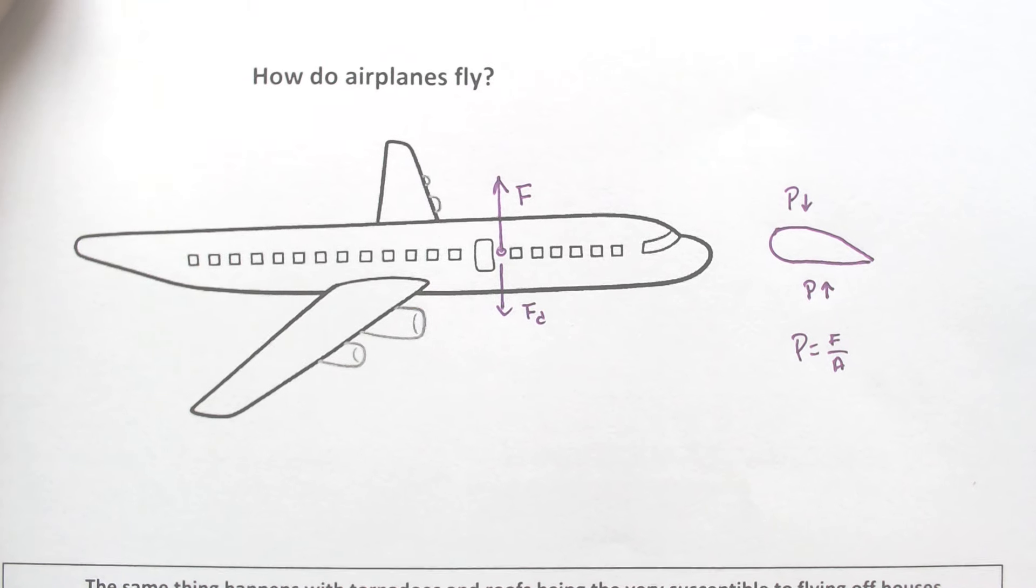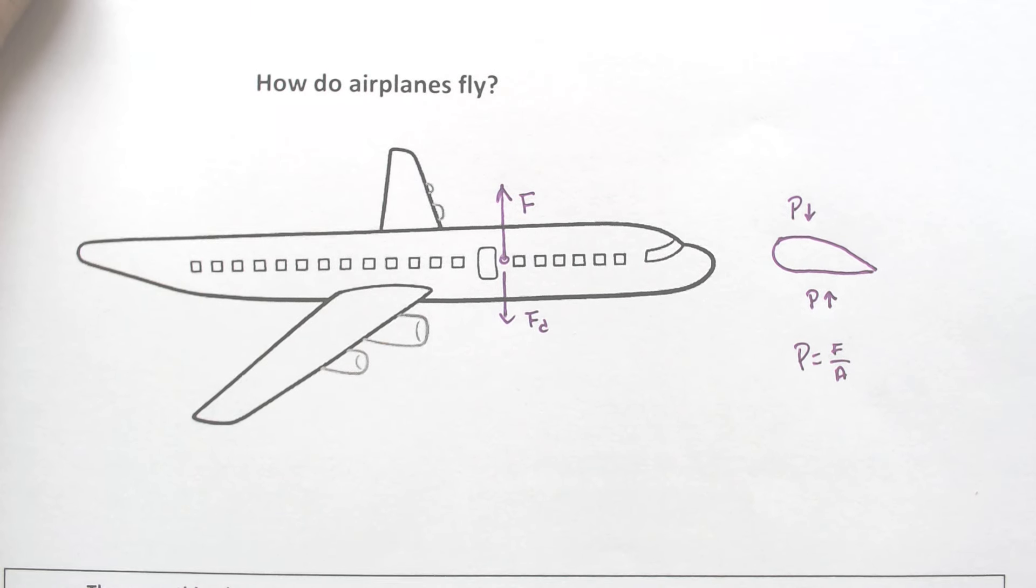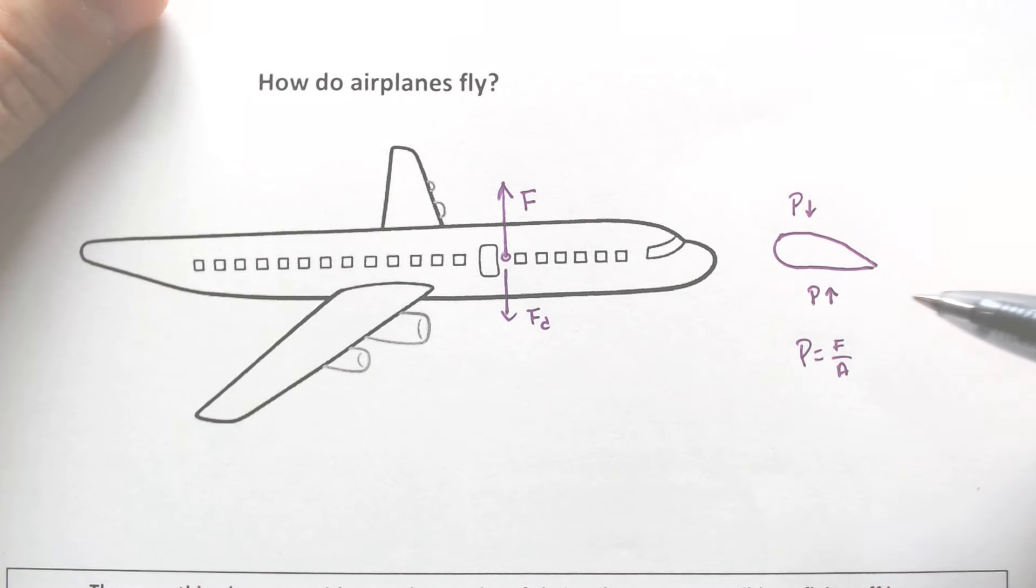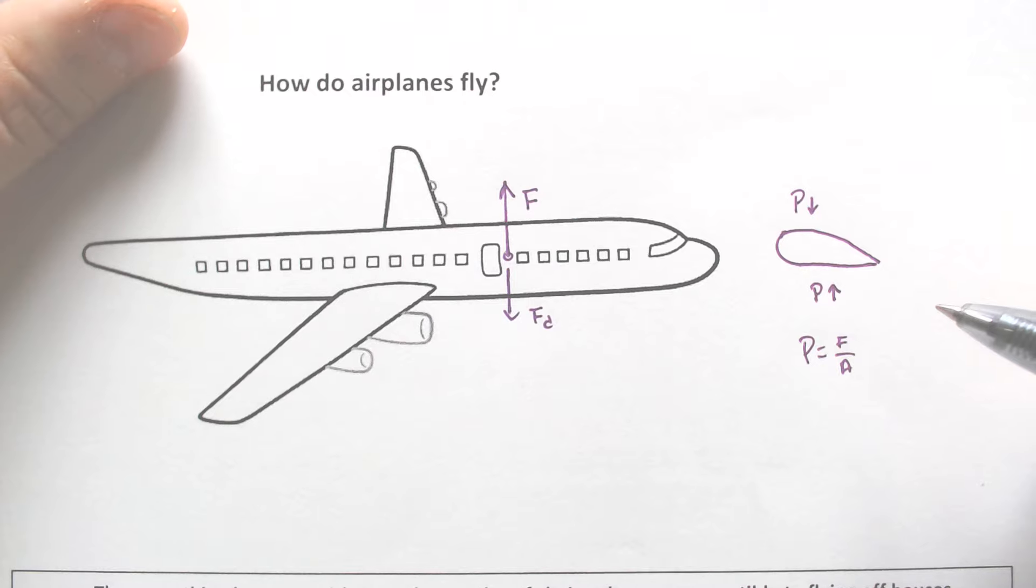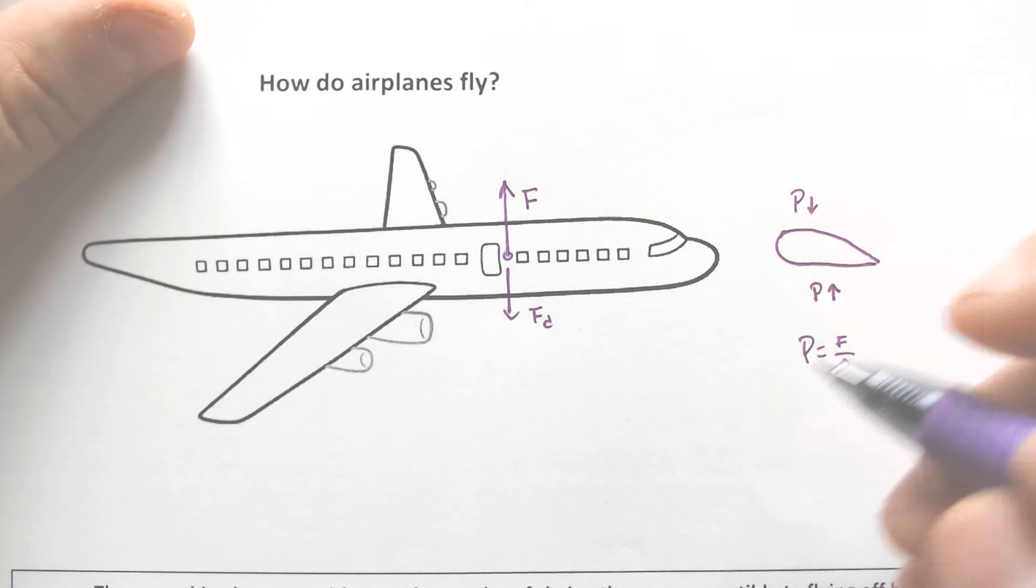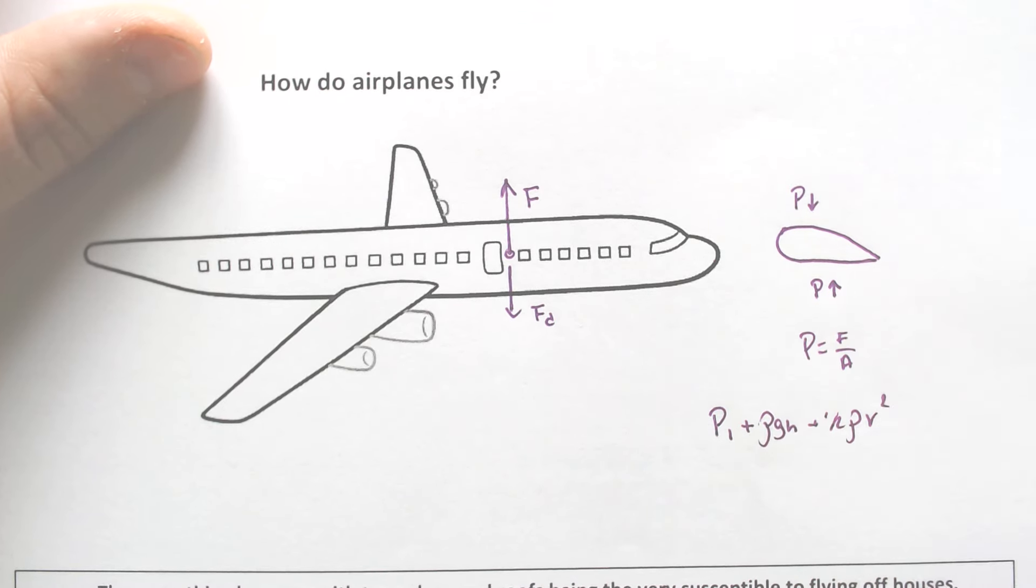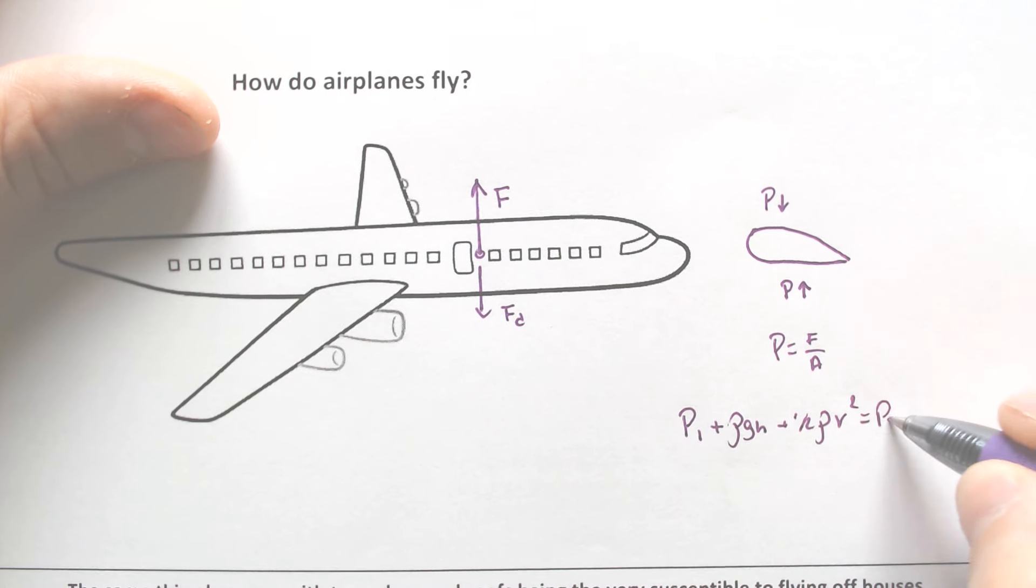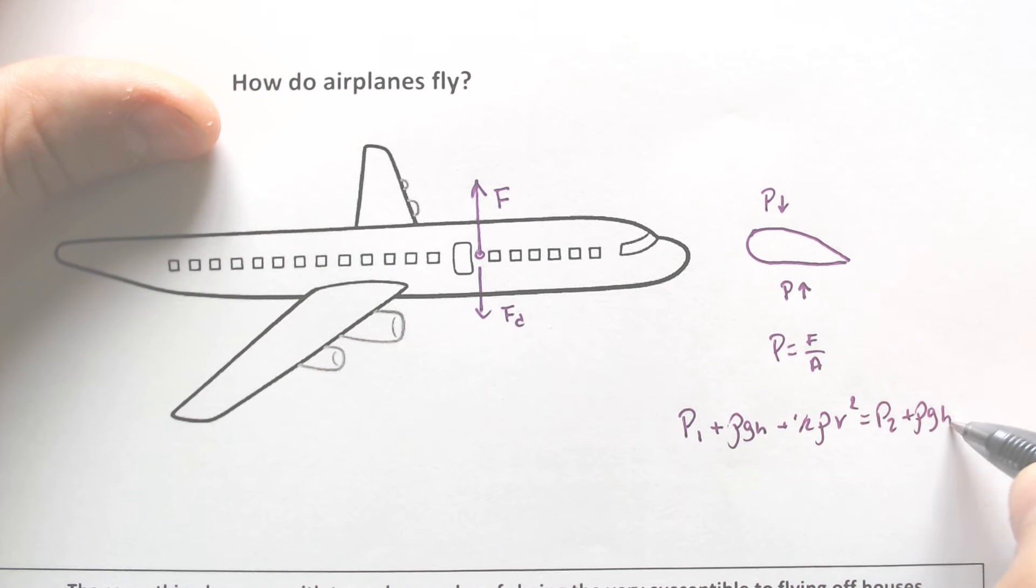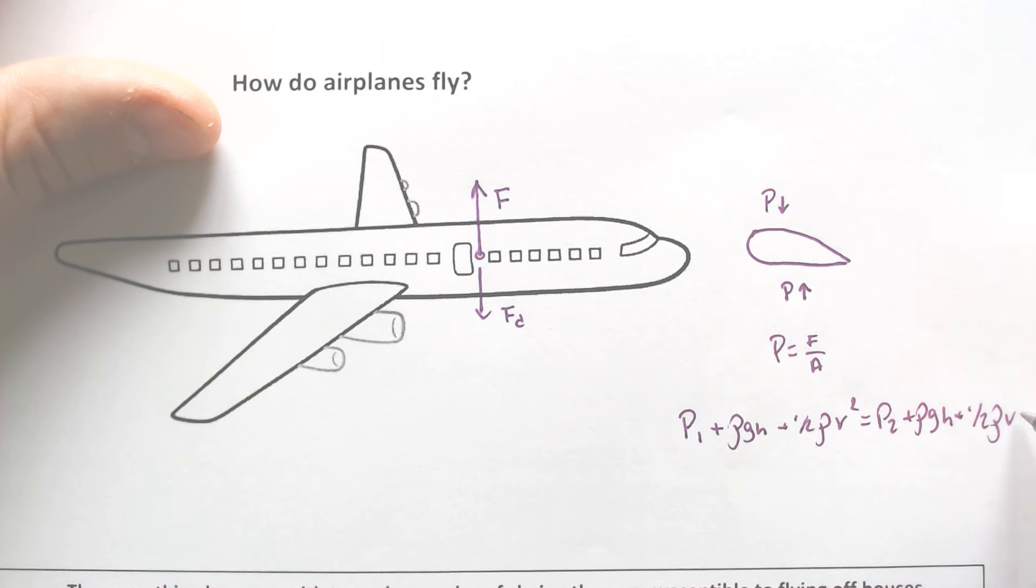So now we have to ask the question, what would make the pressure more on the bottom of a wing? Well, we need to think in terms of Bernoulli's big equation. If we know Bernoulli's big equation, which is P1 plus rho GH plus 1 half rho V squared equals P2 plus rho GH plus 1 half rho V squared.